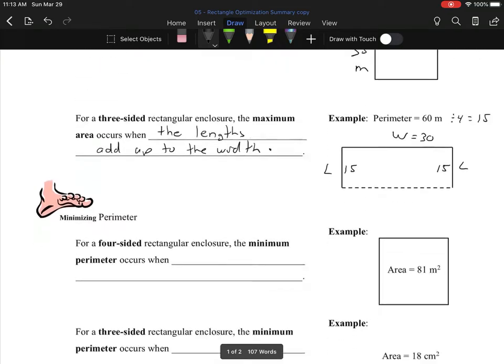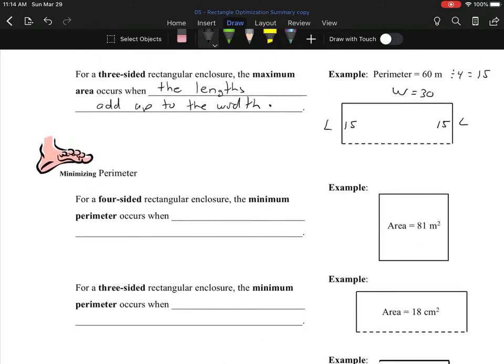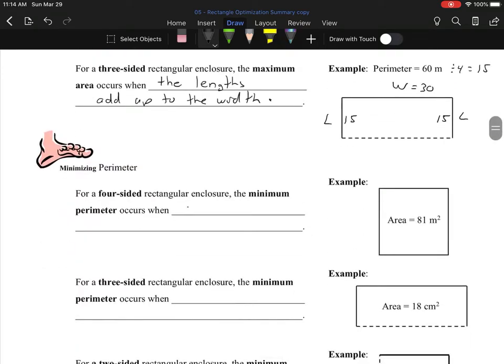Now minimizing perimeter: the minimum perimeter occurs when you use a square. So whether it's maximizing area or minimizing perimeter with four sides, we use a square either way.